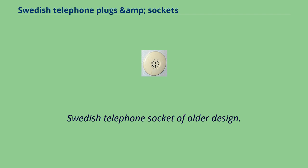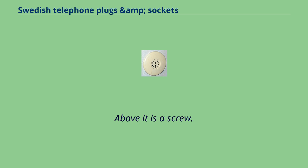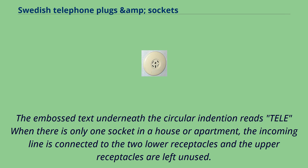Swedish telephone socket of older design. The four angled slots are the connectors while the bigger slot in the lower middle is the presence slot. Above it is a screw. The embossed text underneath the circular indentation reads 'tele.' When there is only one socket in a house or apartment, the incoming line is connected to the two lower receptacles and the upper receptacles are left unused.